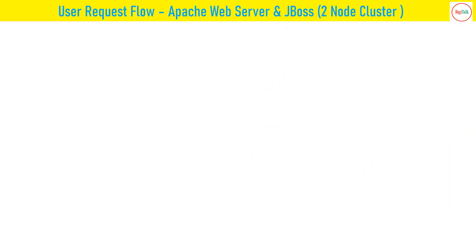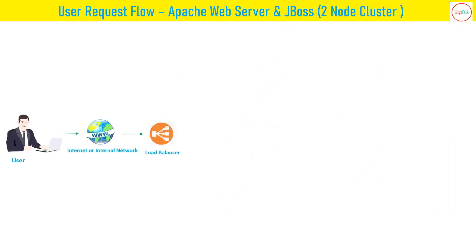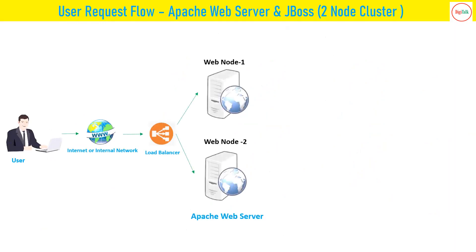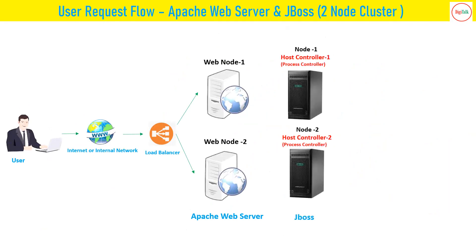Now let us see the request flow in terms of Apache web server and a JBoss two-node cluster. A user tries to access a website from the internet or intranet. The request goes to the load balancer, and from the load balancer suppose I have two Apache web servers in the backend — web node 1 and web node 2. Specifically in terms of JBoss, I have two machines or hosts in the backend — node 1 and node 2.